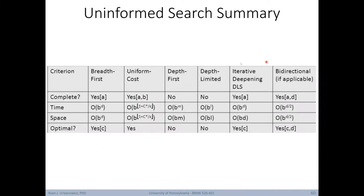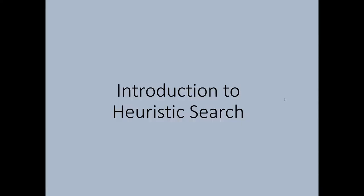We now have a table summarizing the main properties of search algorithms covered so far: BFS, uniform cost search, DFS, depth-limited search, iterative deepening, and bidirectional search. In general, we want to use iterative deepening when there are uniform cost transitions and the solution depth is unknown. If there are different cost transitions, we use uniform cost search, which is also complete and optimal.